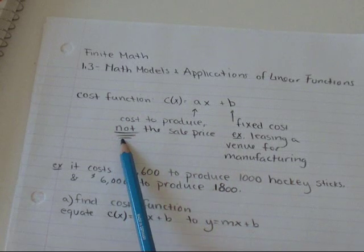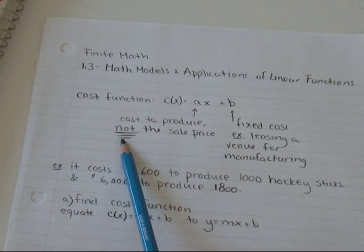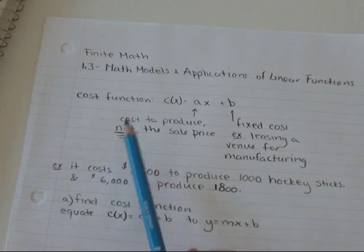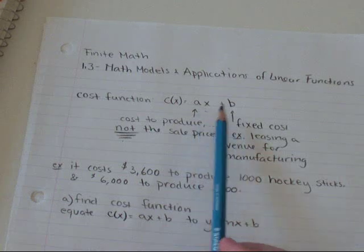It's not the price that the consumer is paying. It's how much materials and electricity and all that stuff is costing the company. x is the number of items you make.